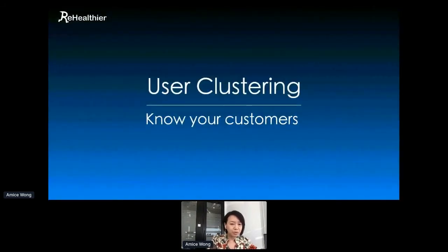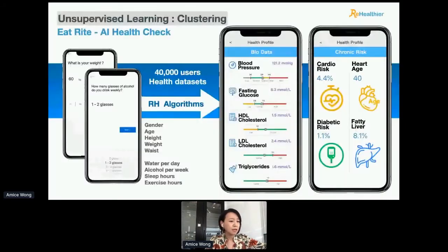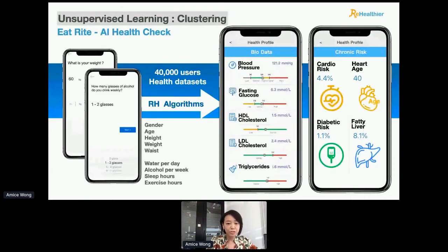First, let's focus on user clustering, because we first have to understand our customers. Looking at an example of clustering users by health conditions: users provide their gender, age, or habitual data such as water intake per day or alcohol per week. With this information, we generate a health check report instantly, including details like blood pressure, glucose levels, and cholesterol levels, to help understand the health profile.